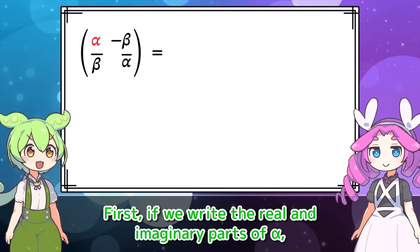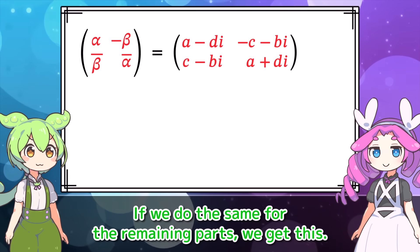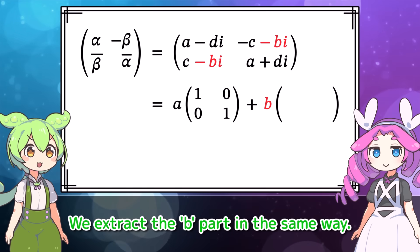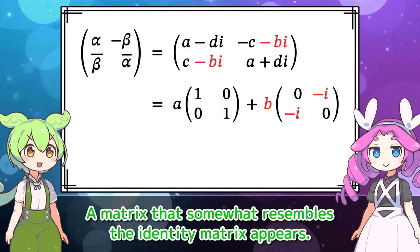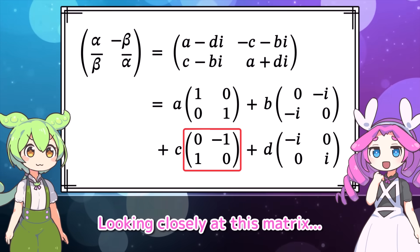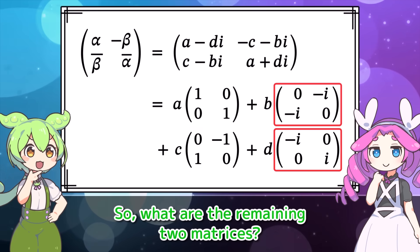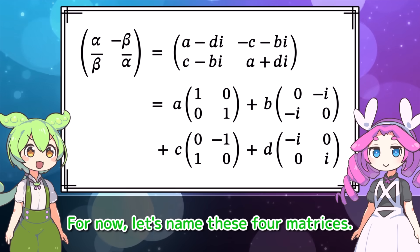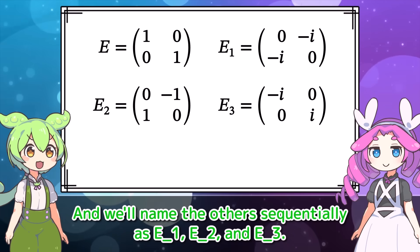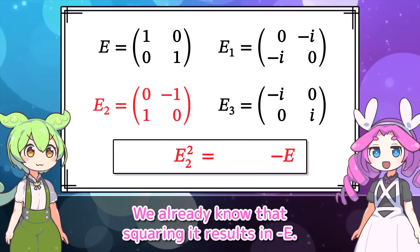If we write the real and imaginary parts of alpha, and do the same to the remaining parts, we can extract the A part, written using the identity matrix. We extract the D part in the same way — a matrix resembling the identity matrix appears. Next, performing the same operation for C and D gives us all four parts. Looking closely at these matrices, one matches the matrix representing the imaginary unit we discussed earlier. So let's name these four matrices: the identity matrix E, and the others as E sub 1, E sub 2, and E sub 3, where E sub 2 is the matrix representing the imaginary unit.